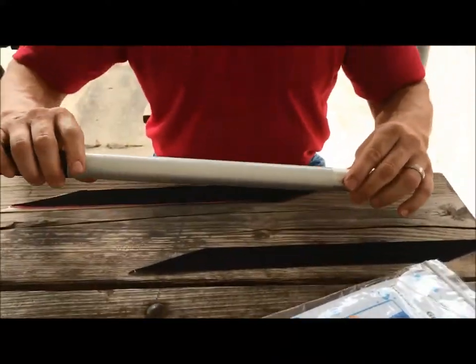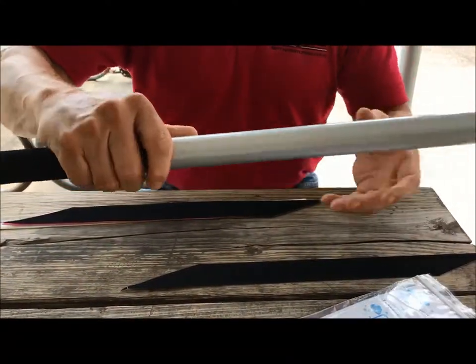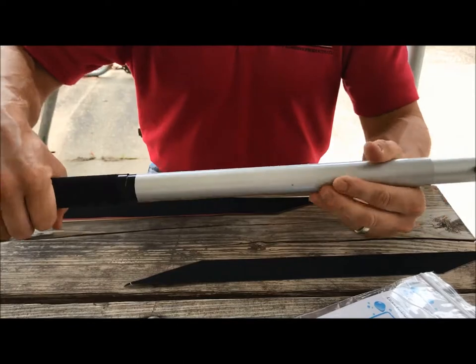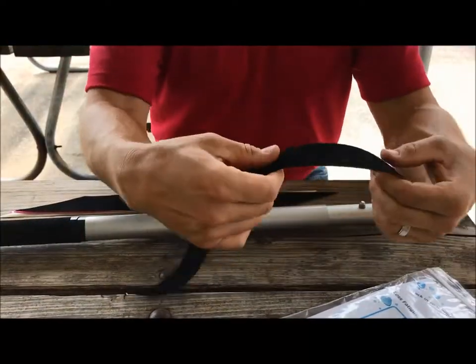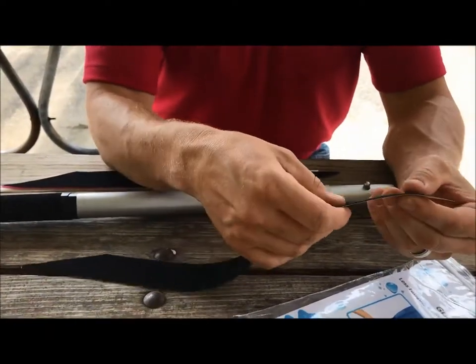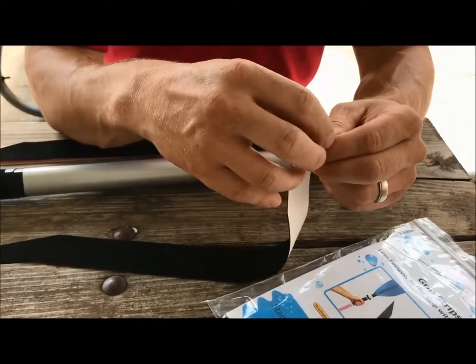The first thing you want to do is clean your paddle really nice, make sure it's free of any debris. You can see the product itself. This is the grippy side, and on the other side is the adhesive side.